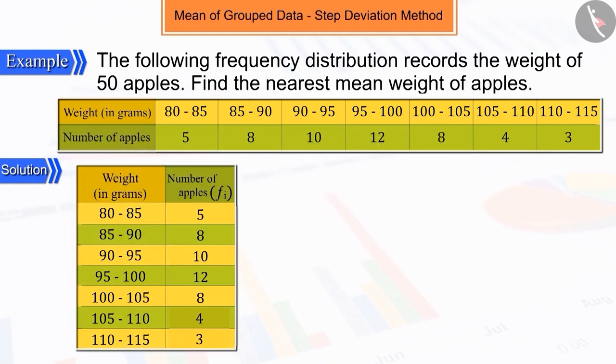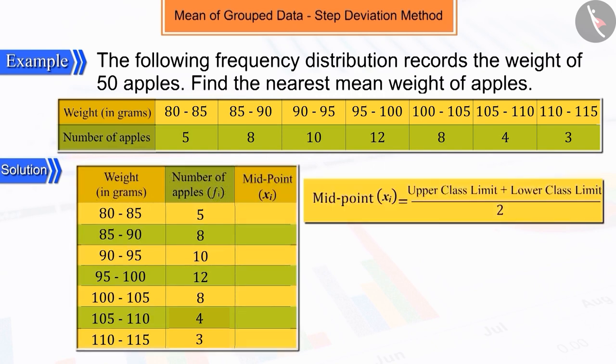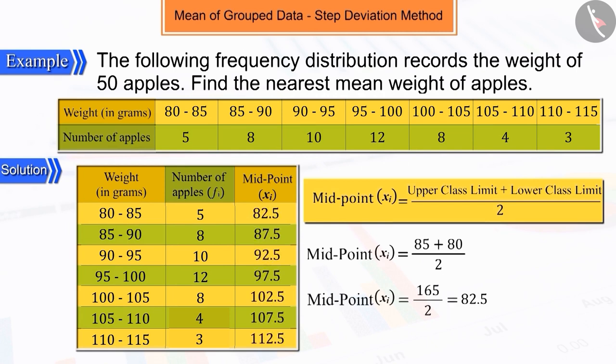We know that in order to find the mean, we first need to find the midpoint of this distribution table, which we find from the class intervals and show it in the table.